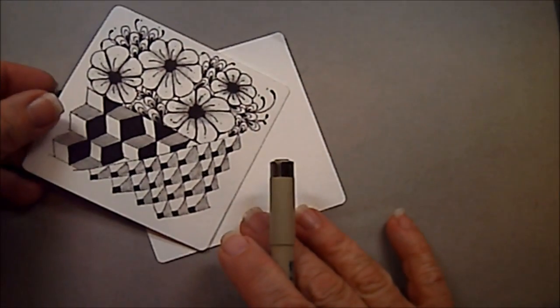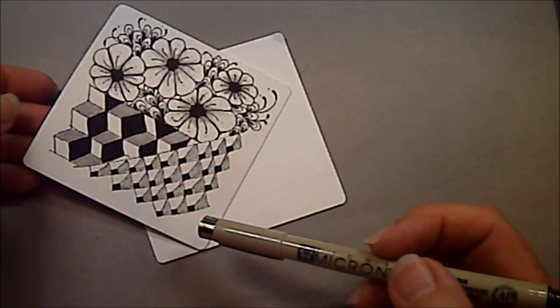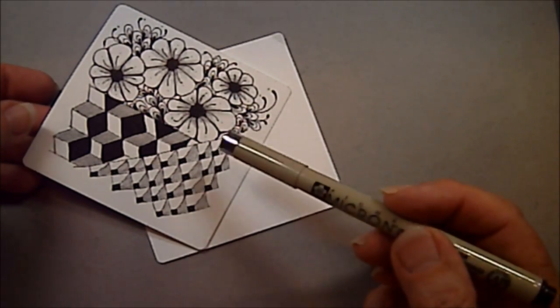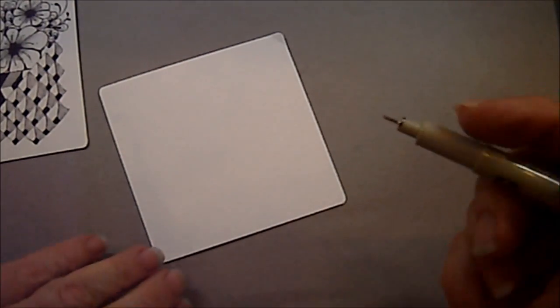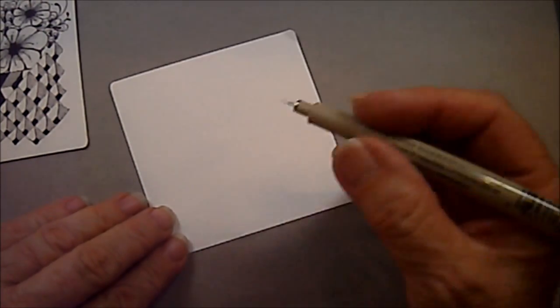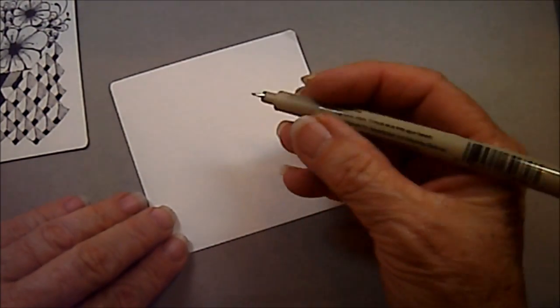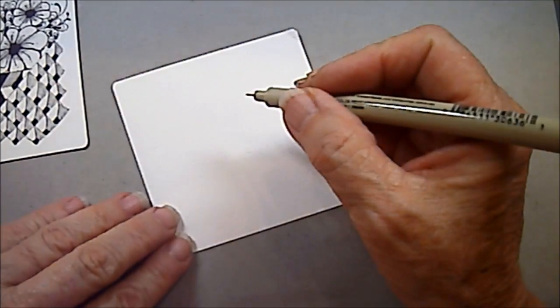We've got some here. These are some of the tangles that I'm teaching this week in class, and so these are little Joyful. So we're just going to start out. I'm going to just use a blank tile, no strings, no borders, today to teach you Joyful.